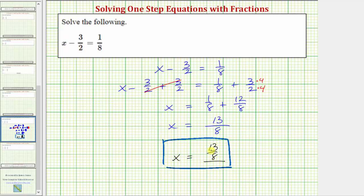Before we go, let's check our solution by substituting 13 eighths for x in the equation. Performing the substitution we would have 13 eighths minus 3 halves equals 1 eighth.